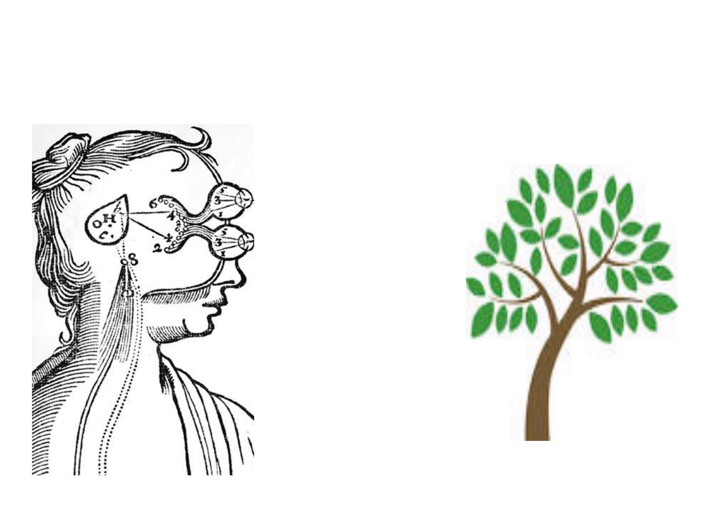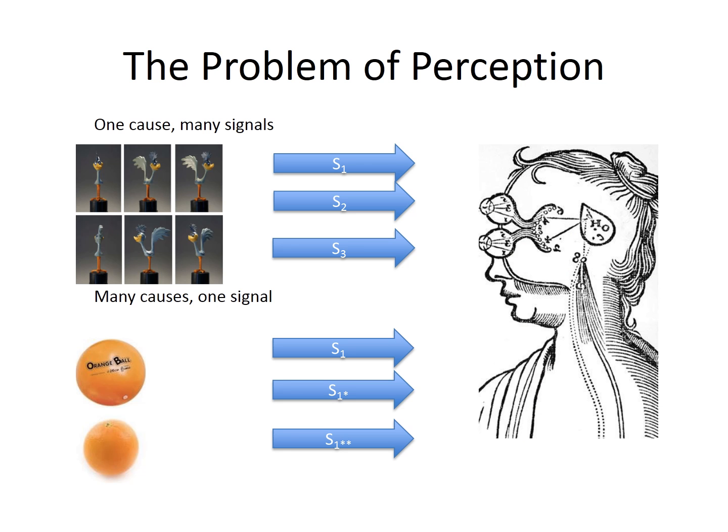Let's begin with the basics. Outside our heads, there's a world of things. But we don't have direct access to these things, only their effects on our senses. Complicating this picture is that there's not a one-to-one relation between causes in the world and their effects on our senses. One cause can produce many different effects, or signals, and different causes can produce the same signal. How, then, are we able to perceive these hidden causes out in the world?